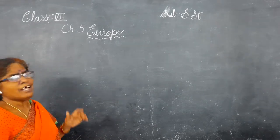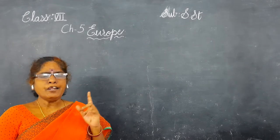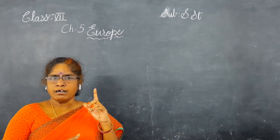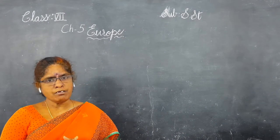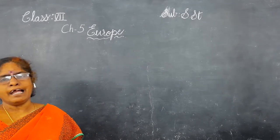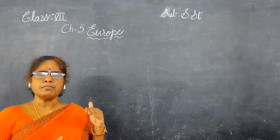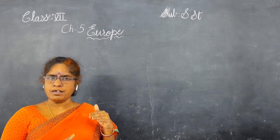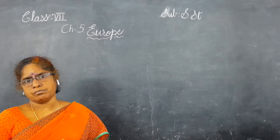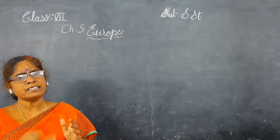We will see the location of Europe. In the north side, the Arctic Ocean. In the west side, Atlantic Ocean. In the south side, Mediterranean Sea. And on the east side, the Ural mountains. These are the boundaries of Europe.